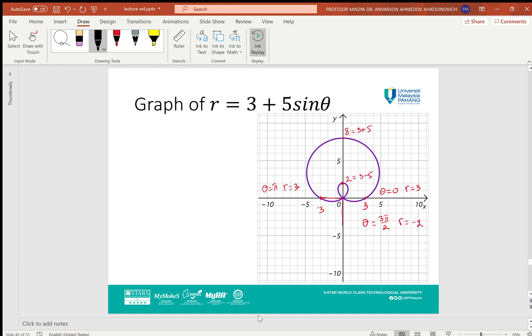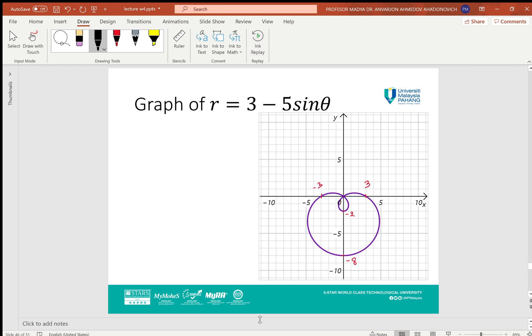When θ = 3π/2, it will be -2. Negative 2 will be going inside, making a loop of the limacon.